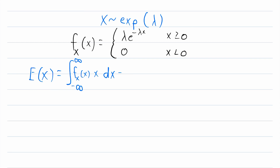For an exponential random variable with parameter lambda, the expected value is 1 over lambda. That's pretty cool, but it's a lot cooler when you can see why this is true — and that's what we'll be going through together in today's lesson.